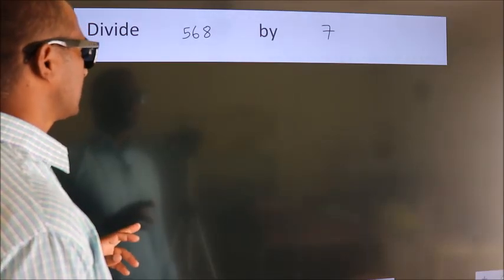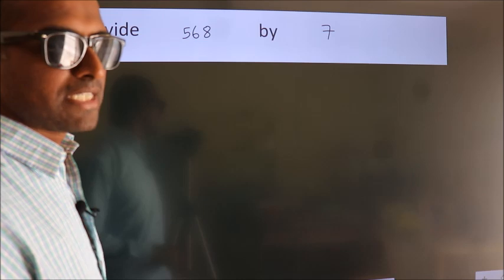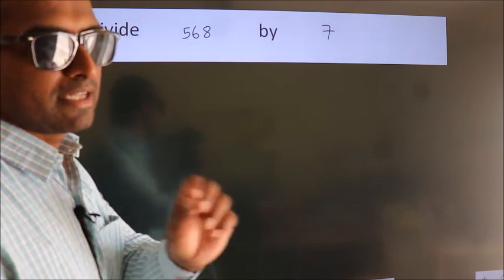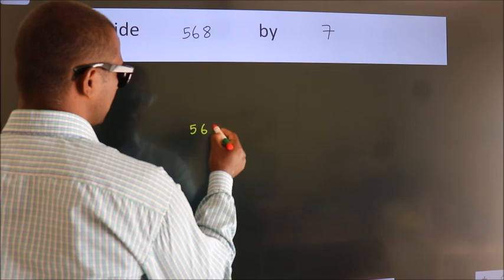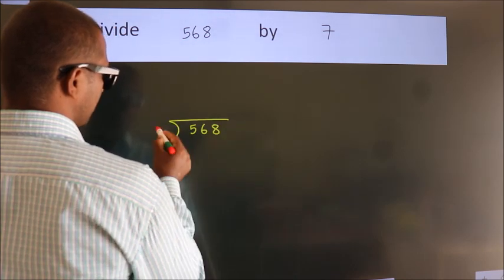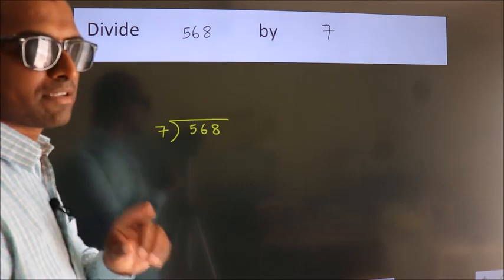Divide 568 by 7. To do this division, we should frame it in this way: 568 here, 7 here. This is your step 1.